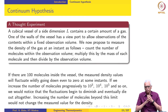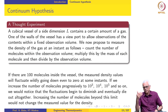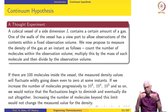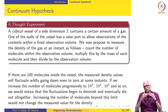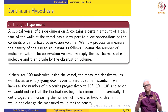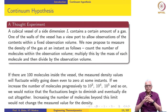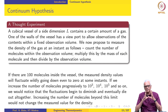If we now progressively increase the number of molecules to 1,000, 10,000, and 100,000, we notice that as the number of molecules increases, the fluctuations in density values begin to diminish. The values do not seem to go down to zero anymore; we always have a finite number of molecules in our observation volume, and the fluctuations themselves are not very high. Beyond a certain threshold, the fluctuations die out completely — it does not matter how much we increase the number of molecules beyond that threshold. We get a single value for density not only at a given observation volume but at any observation volume in the vessel.